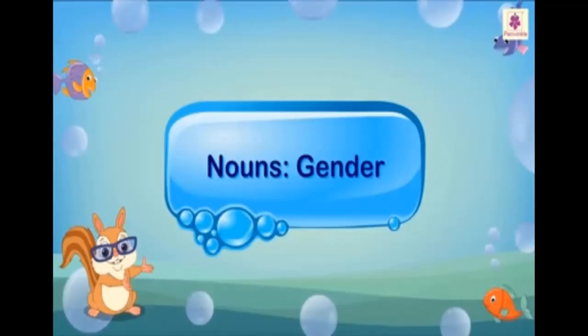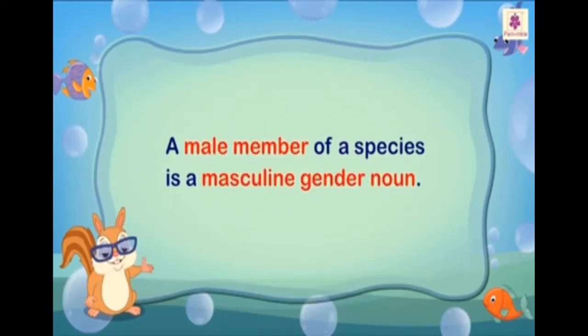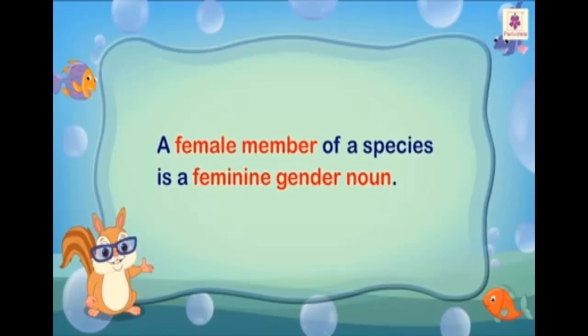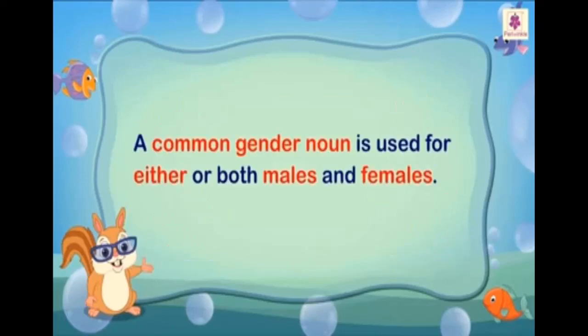Now we will do nouns gender. Masculine, feminine, common and neutral are the four types of gender nouns in English. A male member of a species is a masculine gender noun — for example, uncle, king, hero, bull. A female member of a species is a feminine gender noun — for example, aunt, queen, heroine, cow. A common gender noun is used for either or both males and females.